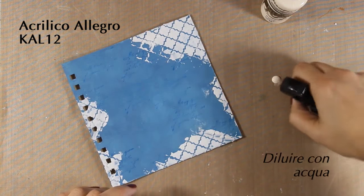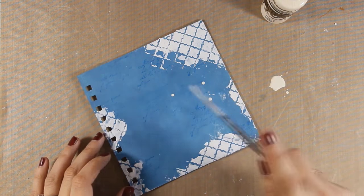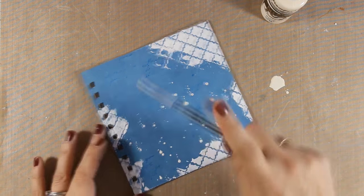And now it's time to do some splashes. I am mixing up water with a little bit of ivory acrylic paint and with a thin brush I am going to do some splashes.